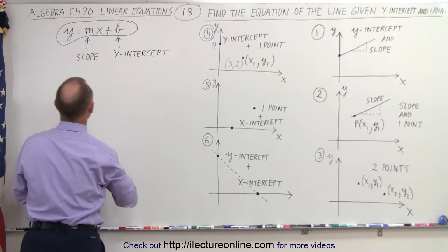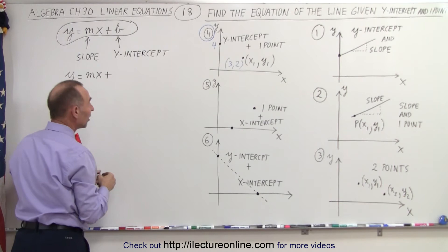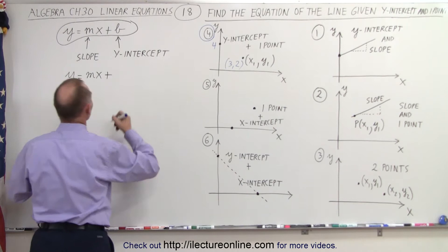Well, since they give us the y-intercept, we should start by plugging it in right here. Let's do that first. We have y is equal to mx plus, and instead of b, they tell us what the y-intercept is, we'll write the number 4. There we go.